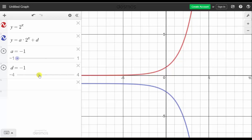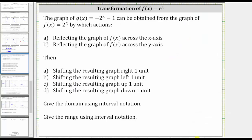Again, we have a reflection across the x-axis and then a shift down 1 unit. So going back to our work, to get the graph g of x, we would have to reflect f of x across the x-axis and then shift the graph down 1 unit.